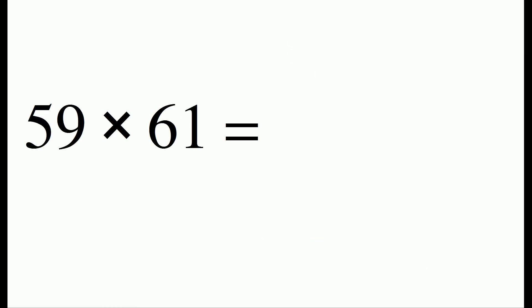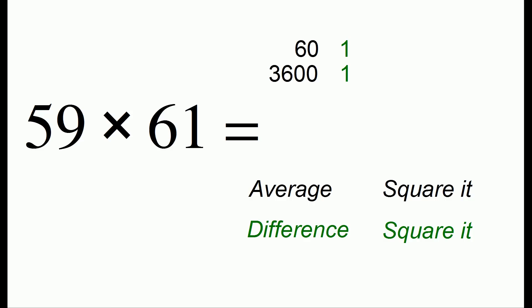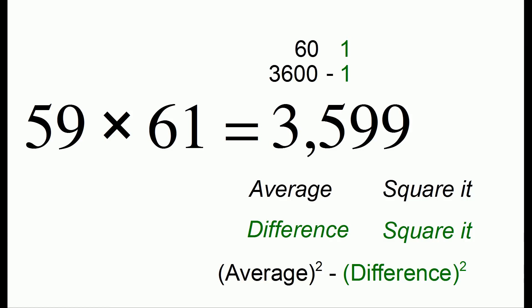Let's do another example. Let's do 59 times 61. We mentally compute the average of 60. Then we take the square of 3600. We then look at the difference from the average, which is 1. We square that, which is also 1. And finally we take the difference of the squares, which gets us to 3599.